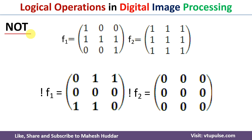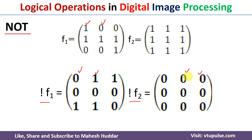The next operator is NOT. The NOT operator means whenever we have a pixel value of one it will be converted to zero, and whenever it is zero it will be converted to one — that is the complement. So the NOT of F1 converts all ones to zeros and zeros to ones. Similarly for the NOT of F2, wherever there is one it is converted to zero.